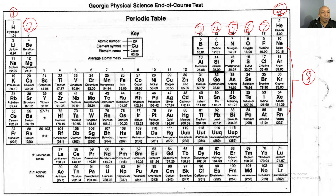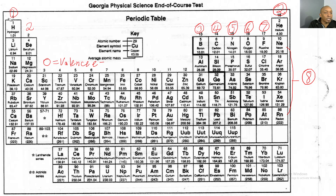Now we're going to put a key in the middle: circle equals valence electrons. So when you see that circle, it indicates valence electrons. Take about 10 more seconds to complete yours, and then we'll move on to the oxidation number or charge. All right, so now we have our valence electrons added.